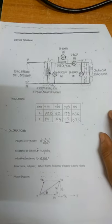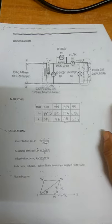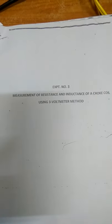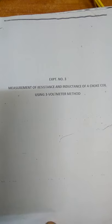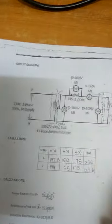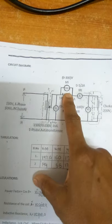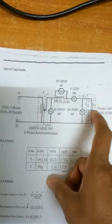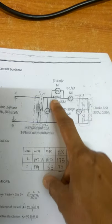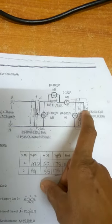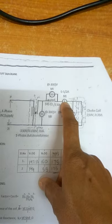Hello, welcome to basic electrical lab. Today we will conduct the experiment on the measurement of resistance and inductance of a choke coil using the 3 voltmeter method. This is the circuit diagram. In the circuit diagram we have an auto transformer, then the rheostat, then the choke coil. The choke coil and rheostat are connected in series with the ammeter.